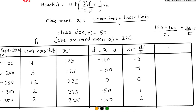The last column is fi·ui — we find the product of frequency and Ui. Multiply: 4 × (−2) = −8, 5 × (−1) = −5, 12 × 0 = 0, 2 × 1 = 2, 2 × 2 = 4.